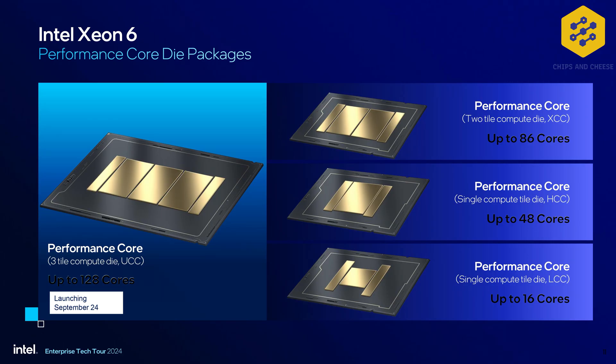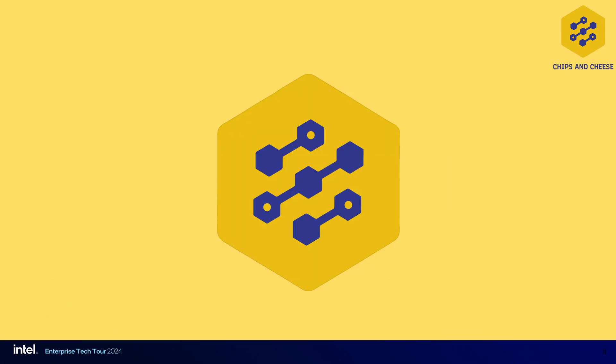UCC goes up to 128 cores. That is three compute dies with two IO dies — and that's something you'll see for all of these: they all have two IO dies. The sort of Granite Rapids SP, your more standard mainstream server parts, that's the XCC dies, or Extreme Core Count.